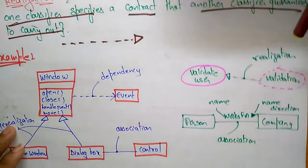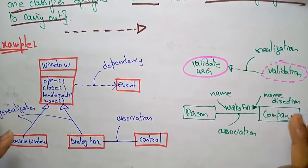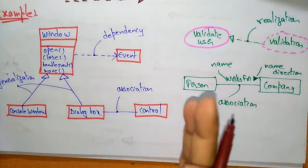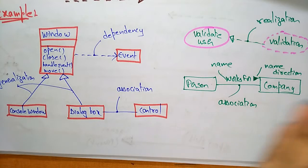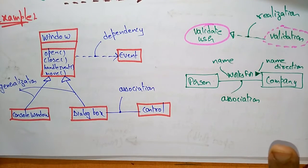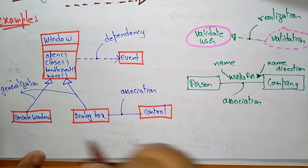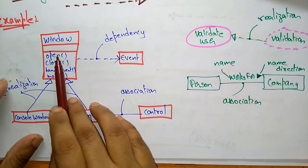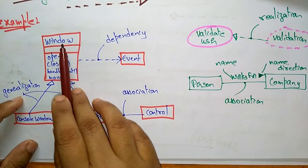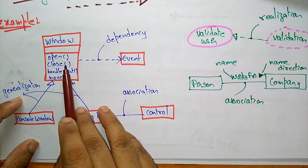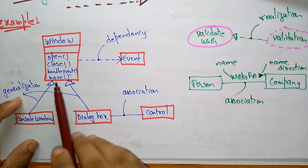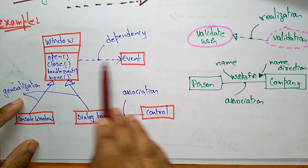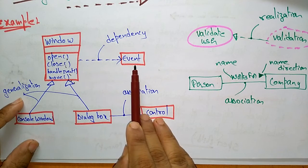Here I am showing a simple example of how these relationships connect different classes in a class diagram. The Window class has attributes and operations such as open, close, handle event, and move. This Window class is dependent on the Event class, shown with the dependency symbol.